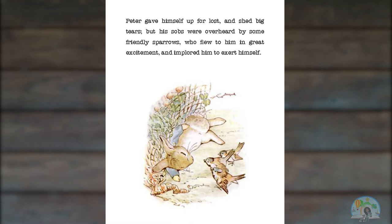Peter gave himself up for lost and shed big tears. But his sobs were overheard by some friendly sparrows who flew to him in great excitement and implored him to exert himself. Let's look at the word sparrows. What do you think a sparrow is? Well, we can look at some clue words. I see it says friendly sparrows who flew, so they can fly. And I also see in the picture some birds. And I know birds can fly. So I think maybe a sparrow is a type of bird.